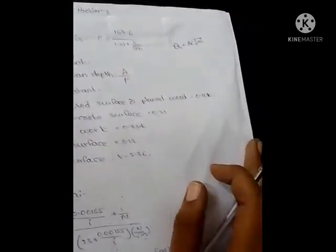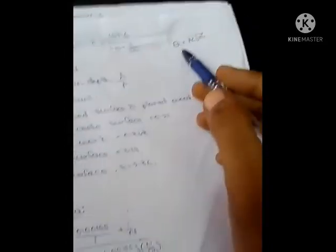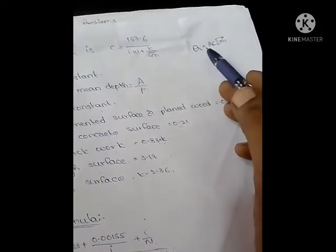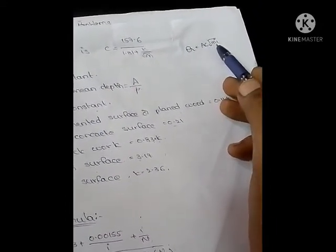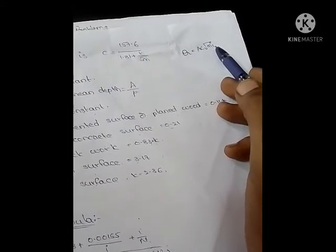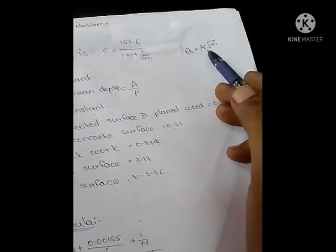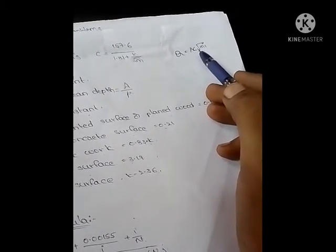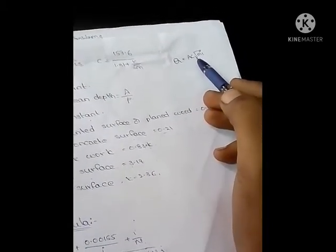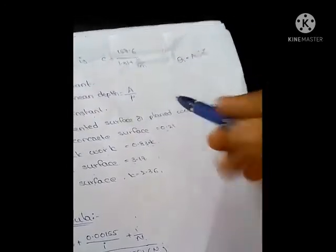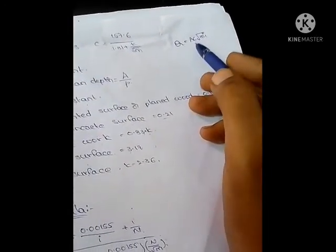In open channel flow for finding discharge, the formula is Q equals AC root MI. Here A is area, M is hydraulic mean depth, I is bed slope, and C is Chezy's constant. If Chezy's constant is not given in the problem, we have to find it.